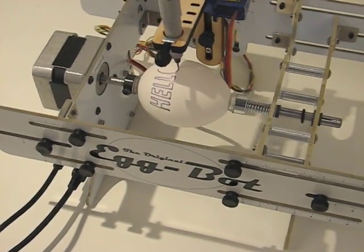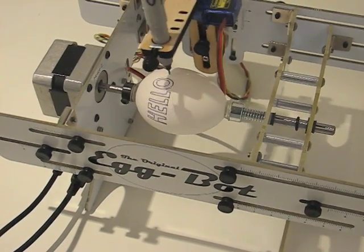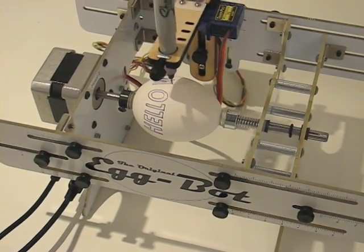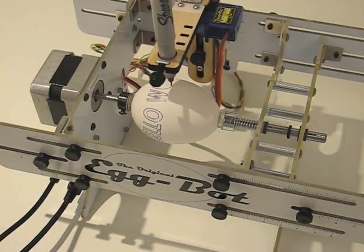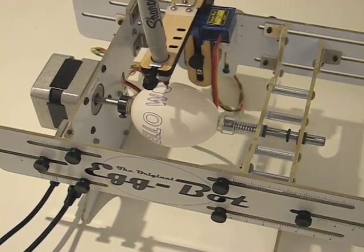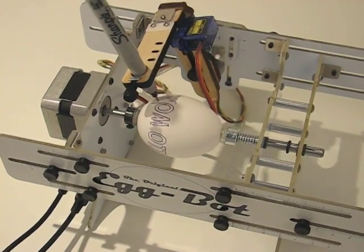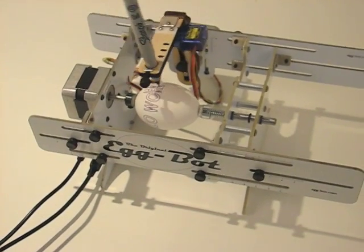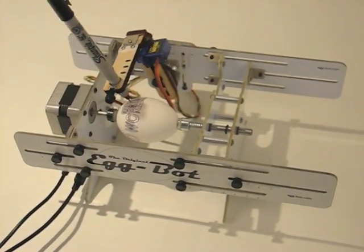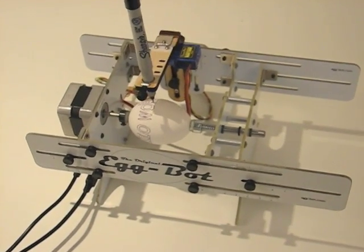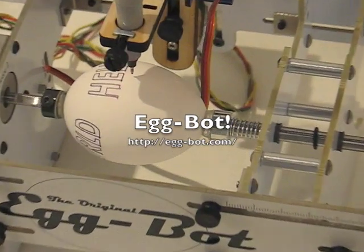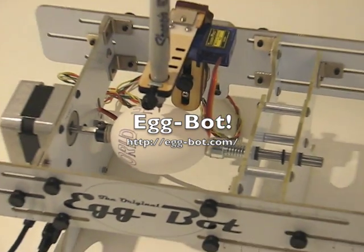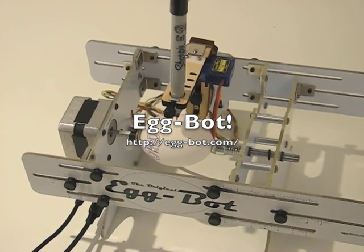Now there are a lot of other options within the Inkscape extension for controlling things like the rate at which you lower and raise the pen, controlling the speed that the pen moves when it's up and when it's down, and other types of manual commands as well. We have documentation of that all on the website. And that's it. That's how to get to your first plot here on the egg bot.